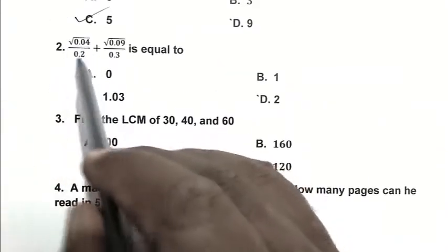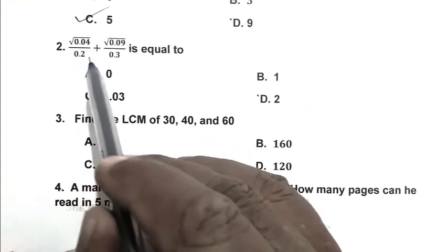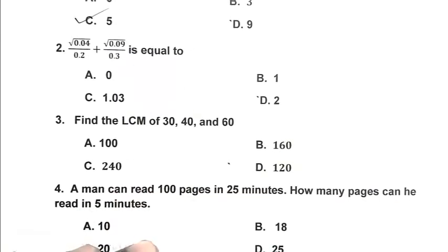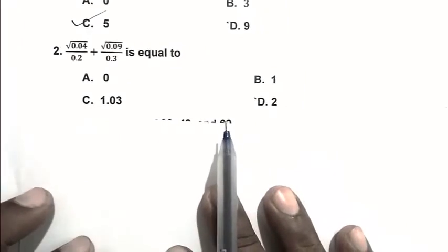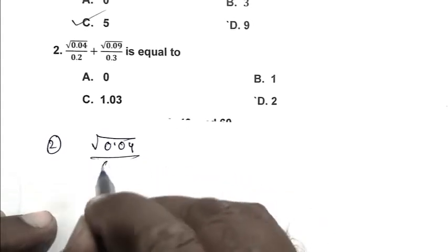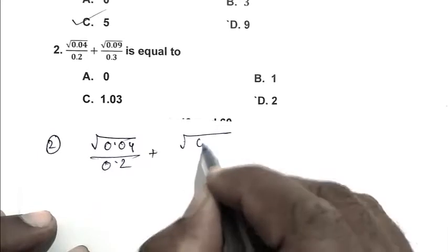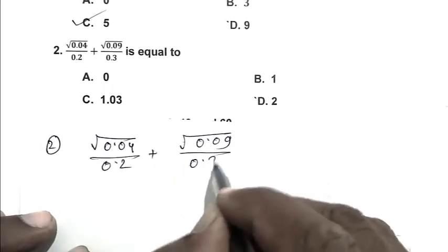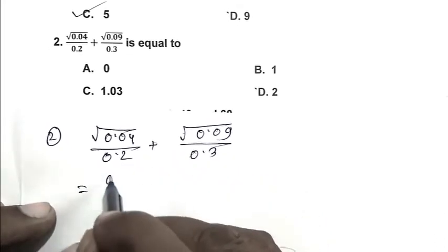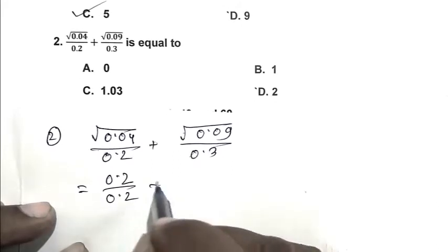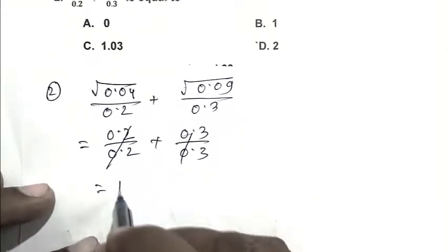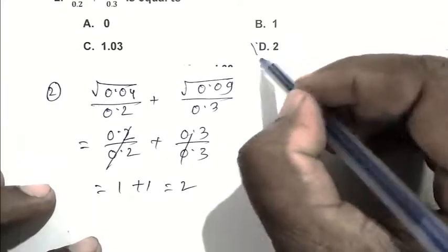Question number 2: Square root of 0.04 by 0.2 plus 0.09 by 0.3 is equal to. We write the expression first. It is 0.04 by 0.2 plus 0.09 by 0.3. Cancel, we get 1 plus 1, that is 2. So D is the right answer.